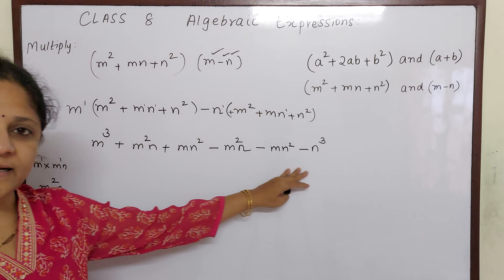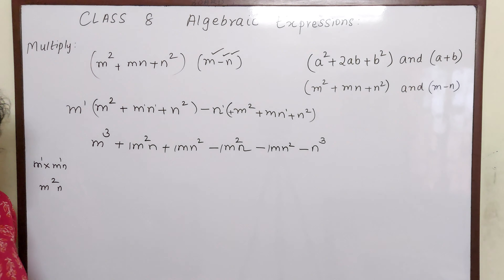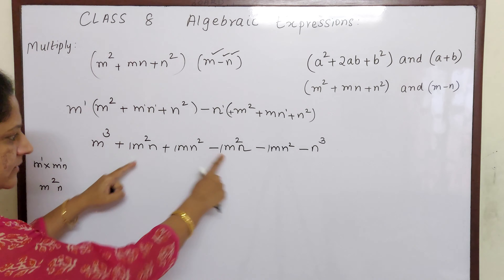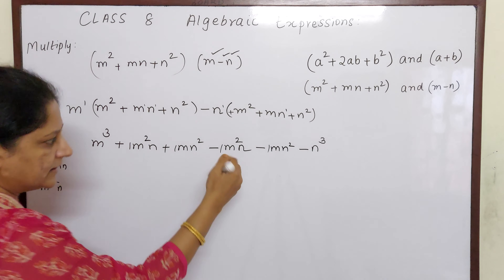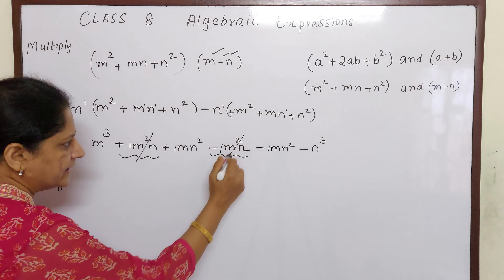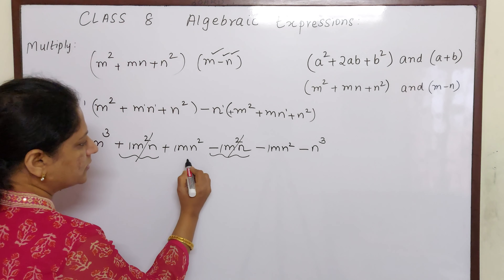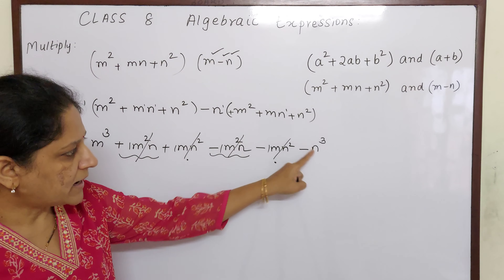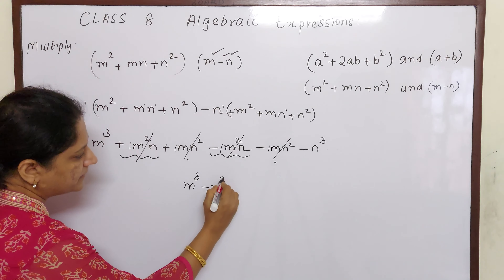Now let us see if there are any like terms. 1·m²n and −1·m²n are like terms: 1 − 1 = 0, so they cancel out. Similarly, mn² and −mn² are like terms: 1 − 1 = 0, so these two also cancel out. What is remaining? m³ minus n³. The sign of n³ is minus, so the final answer is m³ − n³.